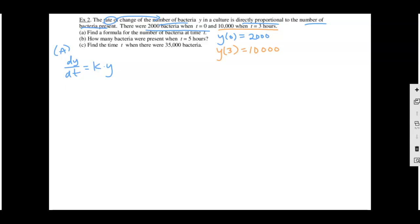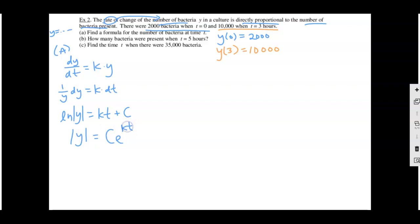One condition will be used to solve for C, and the other for k. Part A says find the formula for the number of bacteria — separate, integrate, use the conditions. Separate: 1/y dy equals k dt. Integrate: ln|y| equals kt plus C. Exponentiate: |y| equals C·e^(kt). Both conditions — 2,000 at time zero and 10,000 — are positive, so we can just drop the absolute value bars. This gives us the general solution y equals C·e^(kt) with two unknowns.